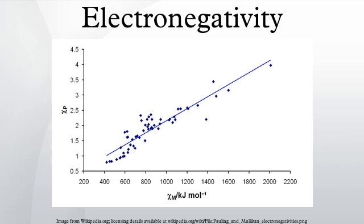Electronegativity, symbol χ, is a chemical property that describes the tendency of an atom or a functional group to attract electrons towards itself. An atom's electronegativity is affected by both its atomic number and the distance at which its valence electrons reside from the charged nucleus. The higher the associated electronegativity number, the more an element or compound attracts electrons towards it. First proposed by Linus Pauling in 1932 as a development of valence bond theory, it has been shown to correlate with a number of other chemical properties.